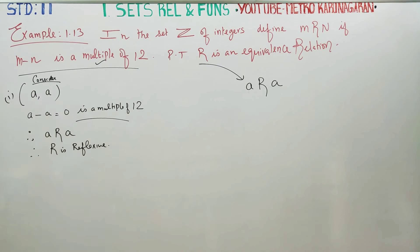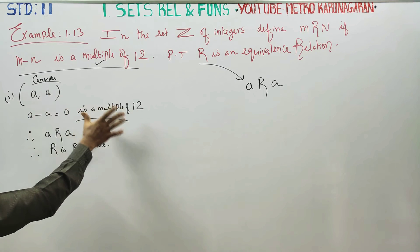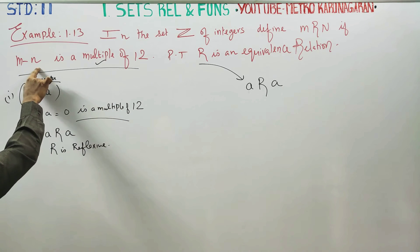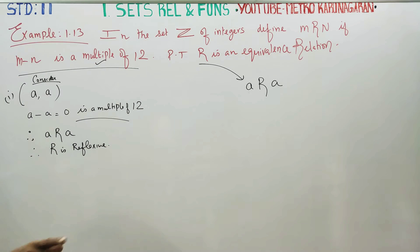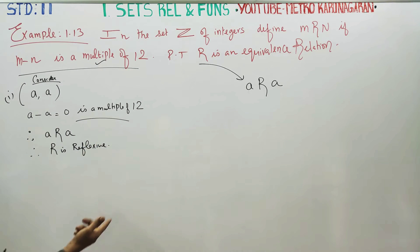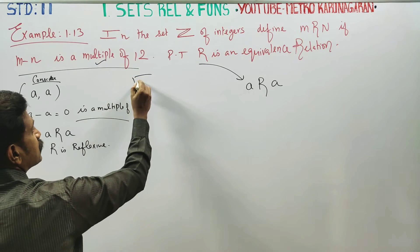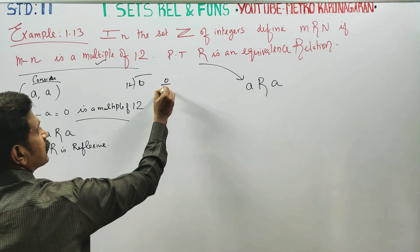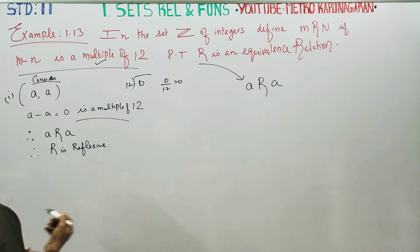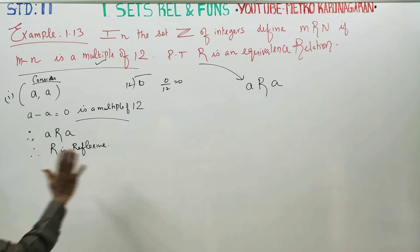Consider (a, a). The difference between the two is a minus a. R is a multiple of 12 — divide by 12: zero divided by 12 is zero. This is a multiple of 12. Therefore R is reflexive.